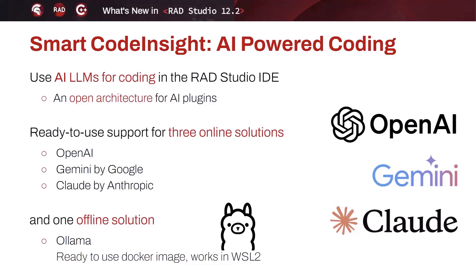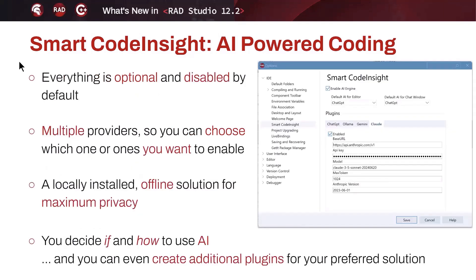That offline solution is Ollama. We are also providing a ready-to-use Docker image that you can install on a Linux machine or on the Windows Subsystem for Linux. What's important to underline is that everything is optional and disabled by default — you can disable or enable each of the individual engines that you want to use.